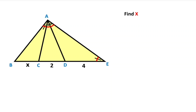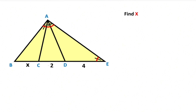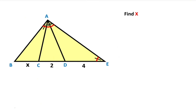Hello everyone. In this video we have one triangle and there's an angle bisector line here. Angle BAC and angle AEB are given as equal. Here one length is given as two and this length is given as four. The question is: what is the length of X?